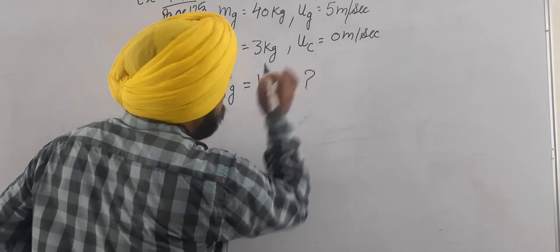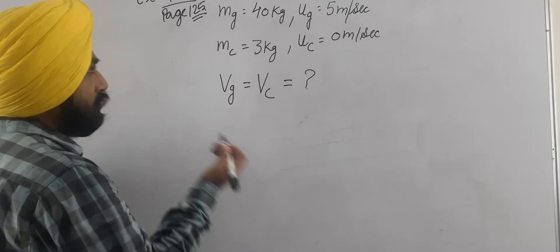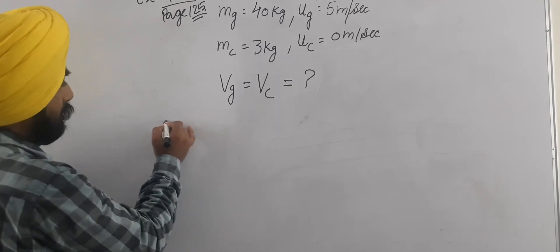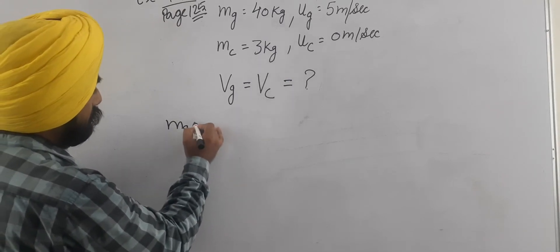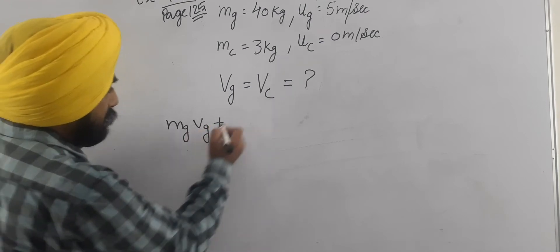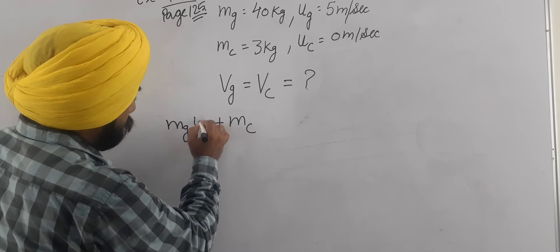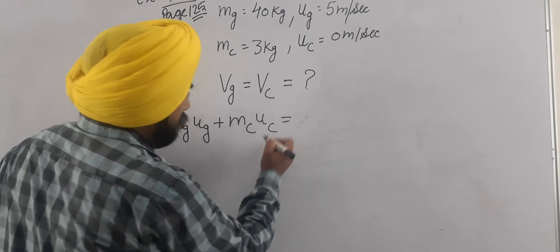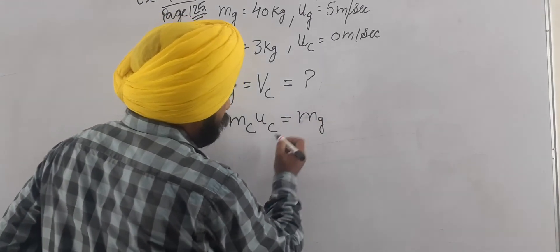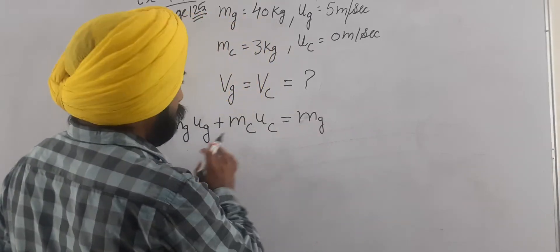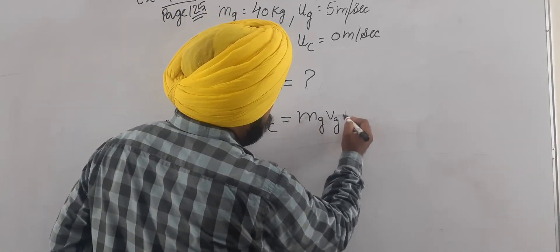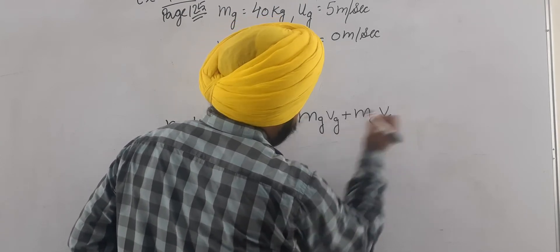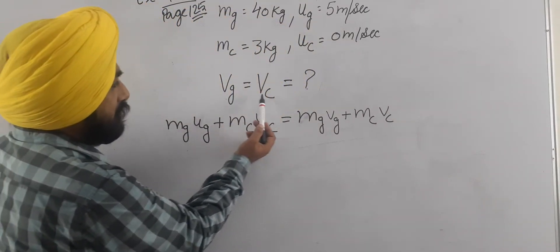Again using the law of conservation of momentum, the total initial momentum, that is mass of girl into initial velocity of girl plus mass of cart into initial velocity of cart, is equal to mass of girl into final velocity of girl plus mass of cart into final velocity of cart.